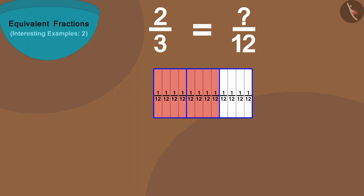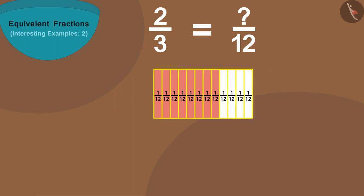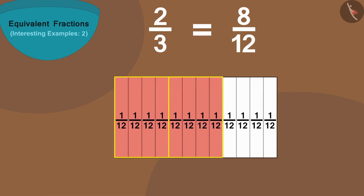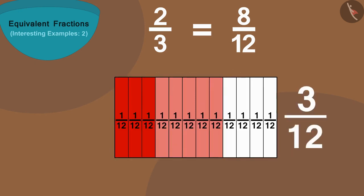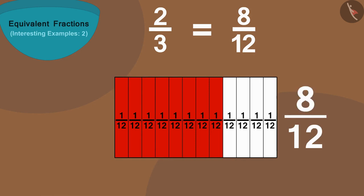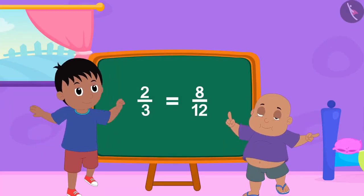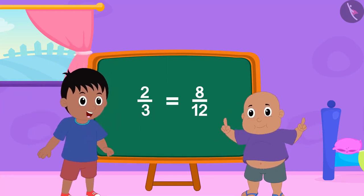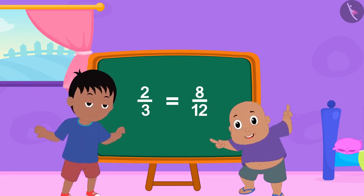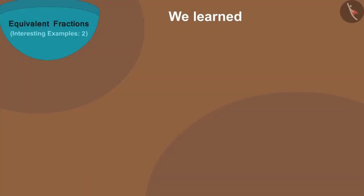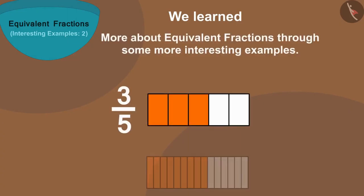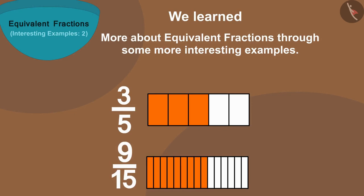We will find that 3 parts of the first strip are equal to 12 parts of the second strip. And if we look closely, 8 parts of the second strip is equal to 2 colored parts of the first strip. Thus, 2/3 is equal to 8/12. With your help, Bablu found all of Raju's fractions. See how he is happily dancing. Children, in this video we learned more about equivalent fractions through some more interesting examples.